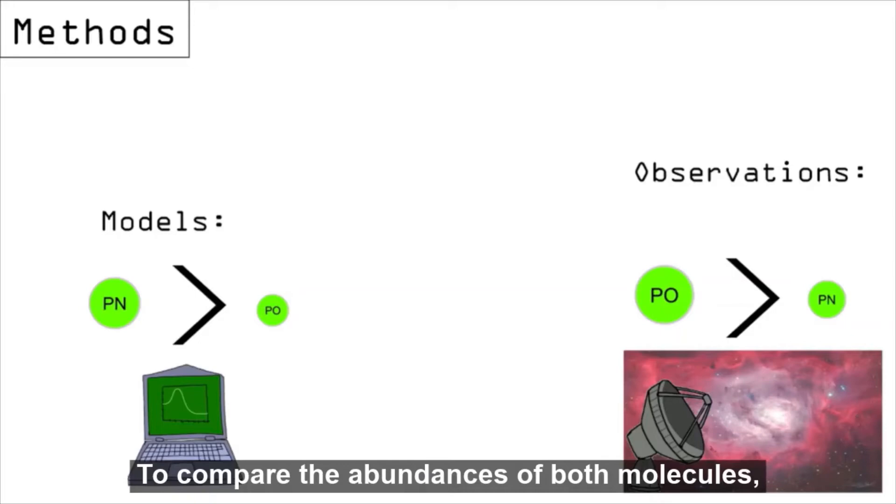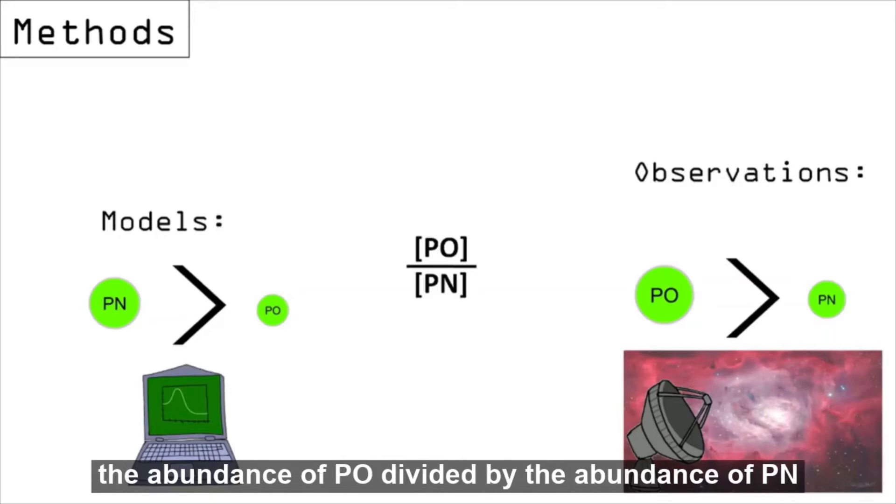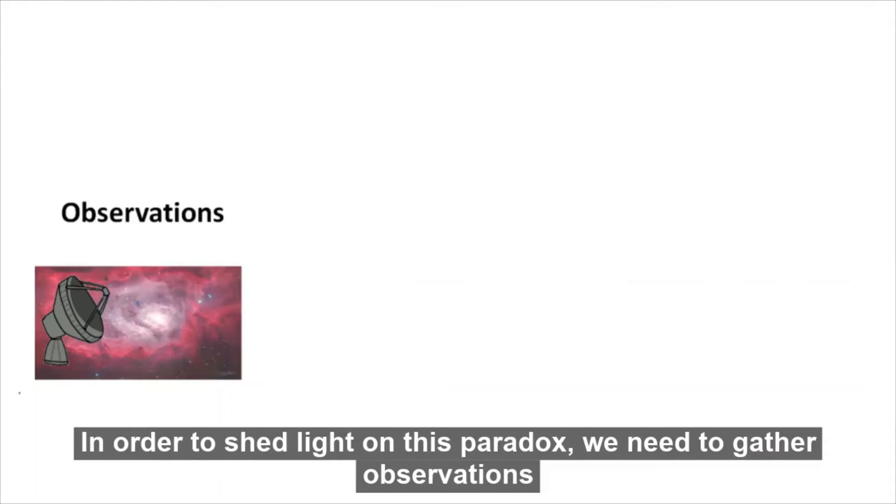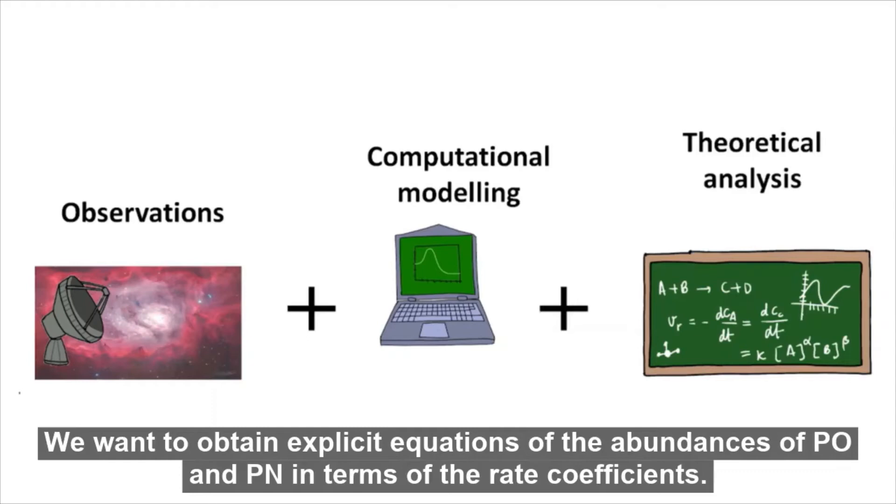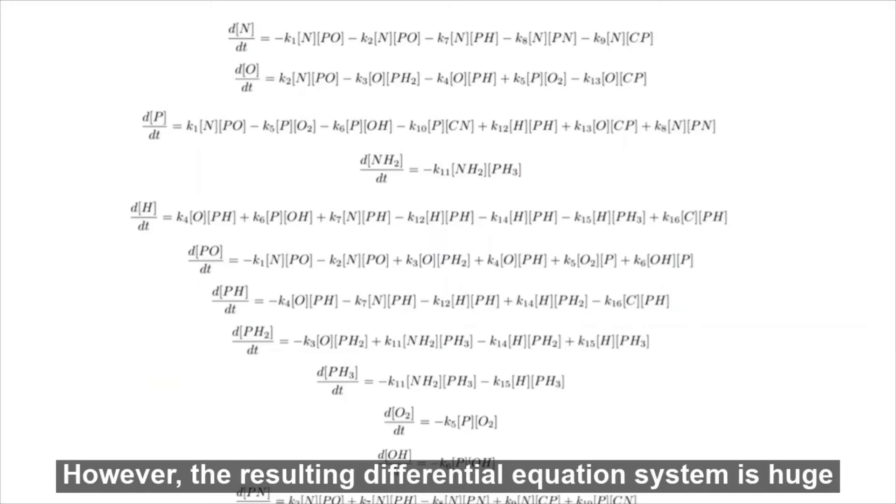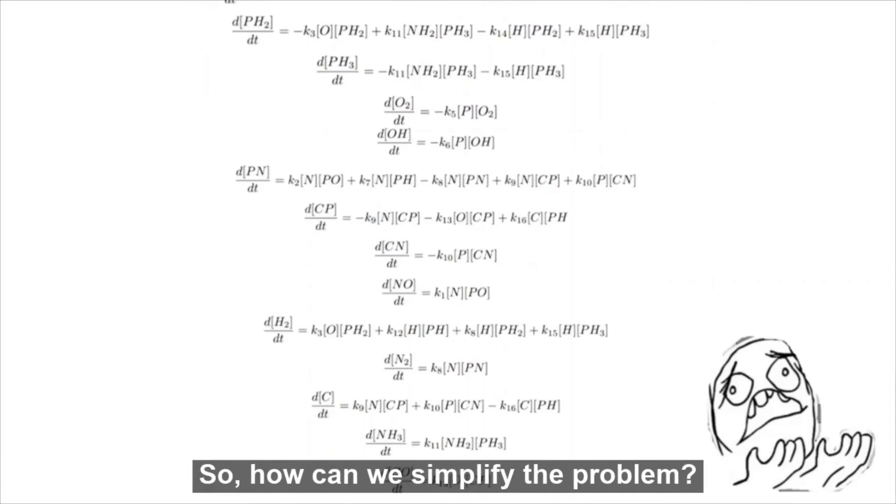To compare the abundances of both molecules, researchers refer to their ratio, that is, the abundance of PO divided by the abundance of PN. In order to shed light on this paradox, we need to gather observations, computational modeling, and our secret ingredient, theoretical analysis. We want to obtain explicit equations of the abundances of PO and PN in terms of the rate coefficients. However, the resulting differential equation system is huge, with too many variables. So, how can we simplify the problem? Well, here is where the phosphorus chemistry network can help.